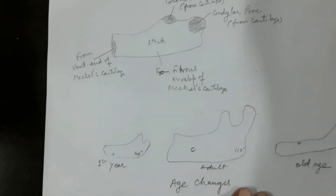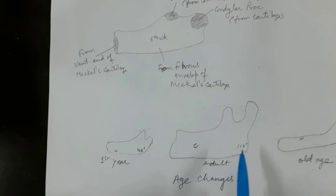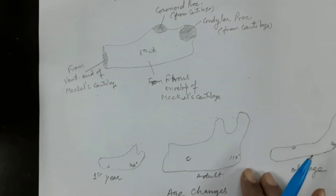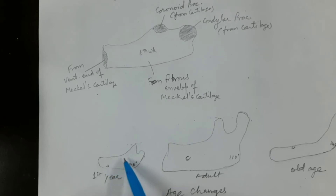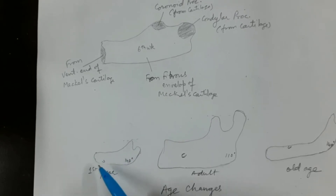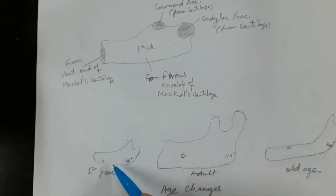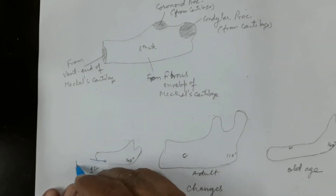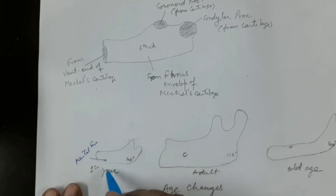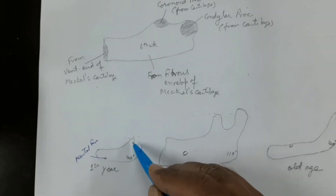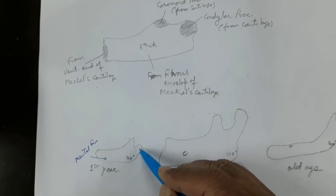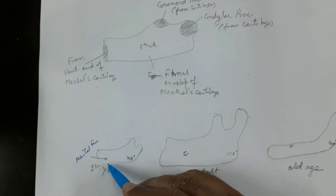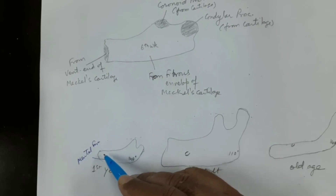The last part of this video covers age changes in the mandible. When a child is around one year of age, the mandible has almost united at the symphysis menti. In this infant mandible there are no teeth or very few teeth — only the incisor teeth may be present. The mental foramen is present near the lower border of the mandible, and the coronoid process is at a higher level than the condylar process.